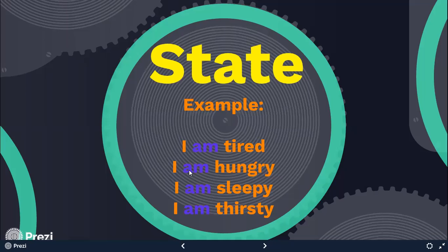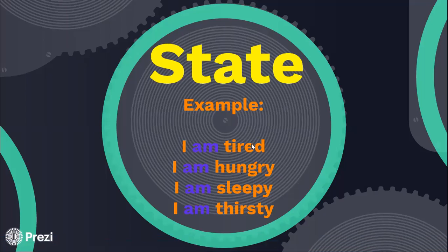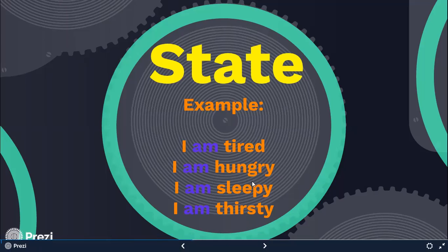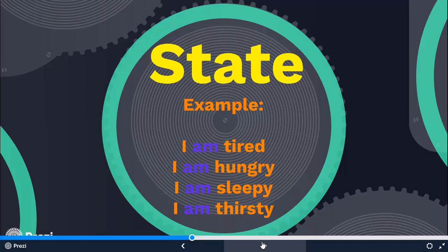Estoy cansada. I'm hungry — tengo hambre. I'm sleepy — tengo sueño. I am thirsty — tengo sed. Todos estos palabras en naranja después del verbo ser o estar son adjetivos. Utilizamos el verbo ser o estar con adjetivos. Cuando hablamos de un estado de ánimo o un estado en el que te encuentres, usamos el verbo ser o estar. Por ejemplo: I am bored — estoy aburrido. I am excited — estoy emocionado.